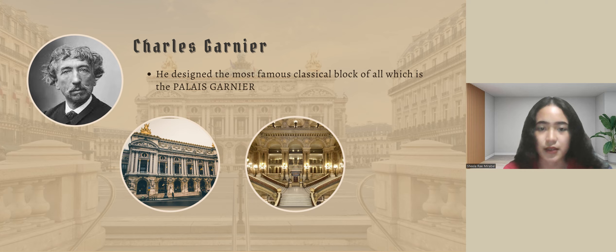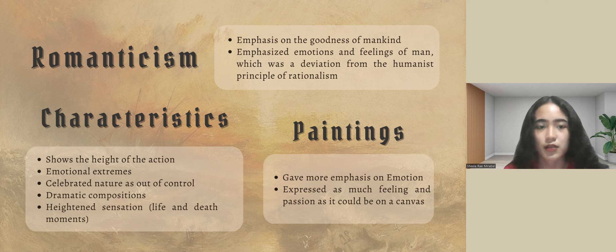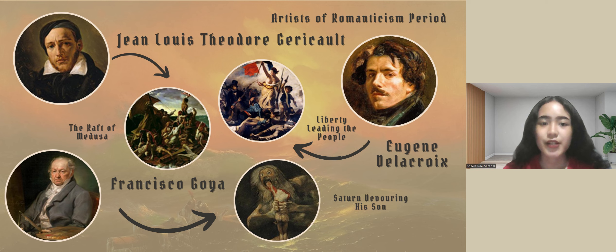Now let's talk about Romanticism. Patriotic and nationalistic movements received a lot of attention throughout the age of revolutions. The emphasis on humanity's goodness is one of the fundamental elements of the Romanticism movement. Artists also highlighted man's emotion and sentiments, which was contrary to the ideals of reason. Characteristics of Romanticism include the height of action, emotional extremes, celebrating nature as out of control, dramatic compositions, and heightened sensations such as life and death moments. Some of the artists in the Romantic period are Jean-Louis Théodore Géricault, who made The Raft of the Medusa; Eugène Delacroix, who made Liberty Leading the People; and Francisco Goya, who made Saturn Devouring His Son.